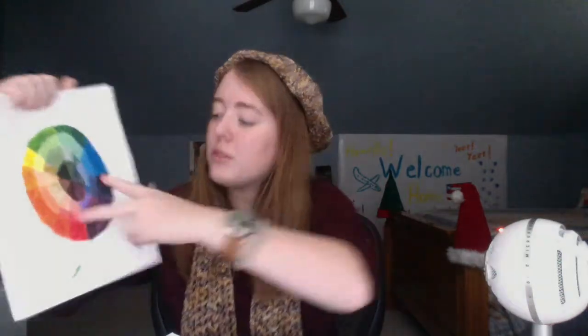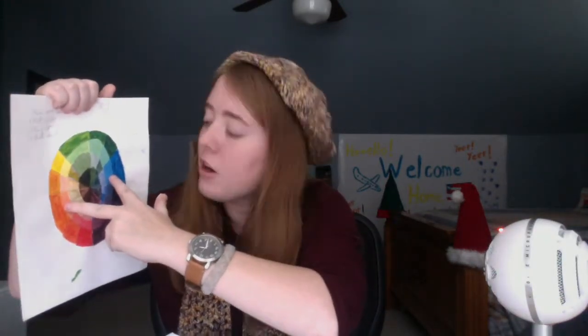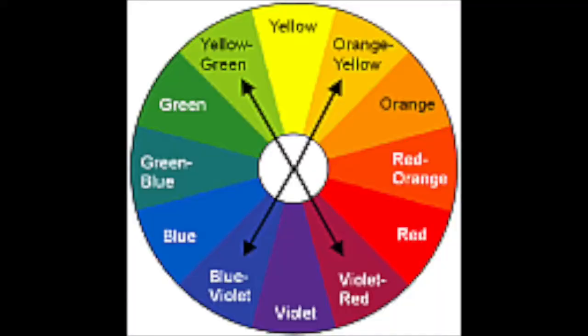Next is double split complementary, which is two sets of complementary colors — so it's two colors across from each other, but then you do two sets of that.